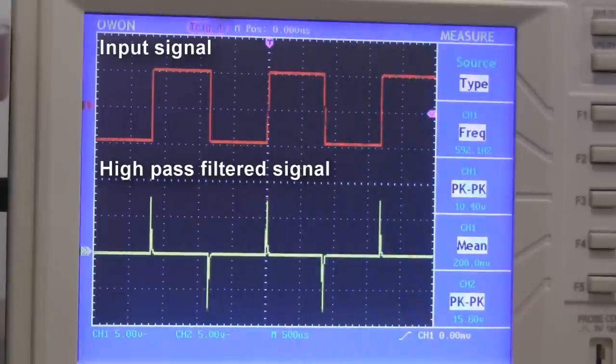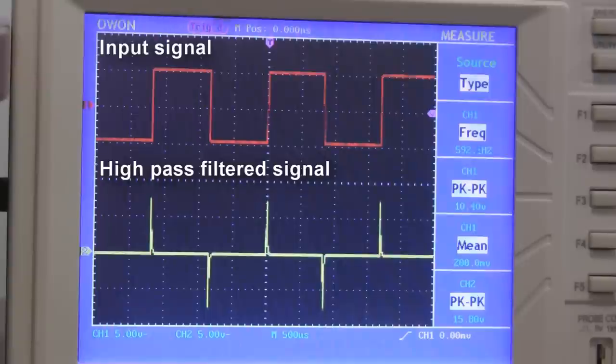Another interesting thing to see is how high-pass filters affect square waves. With this 600 Hz square wave, you can see that only the sudden fast edge transitions are passing through. But the part of the square wave that's just a flat line gets blocked out.